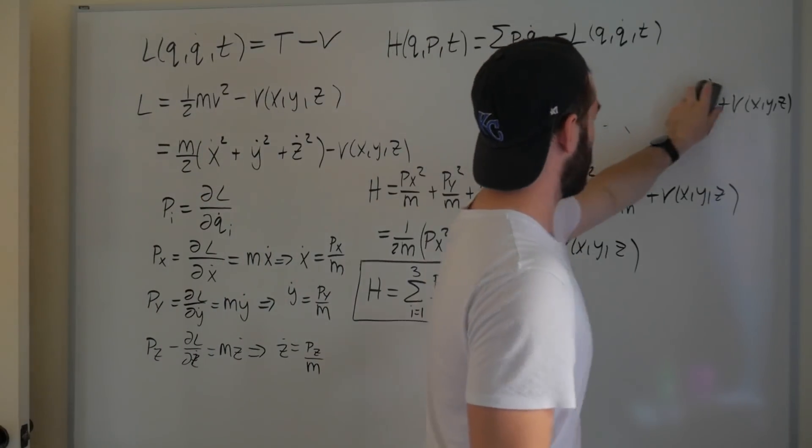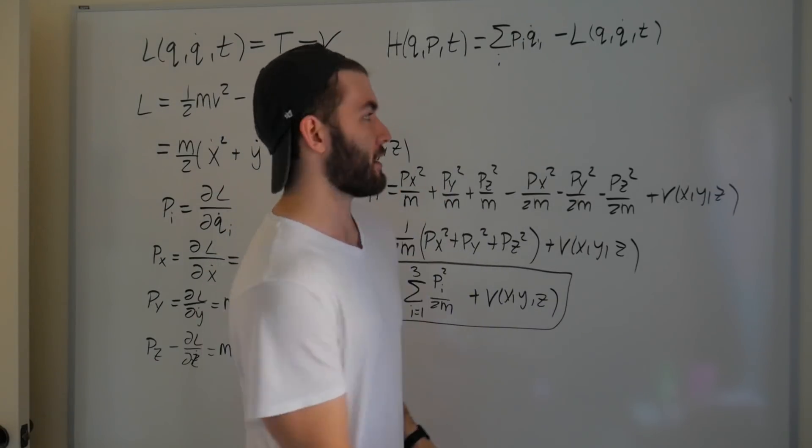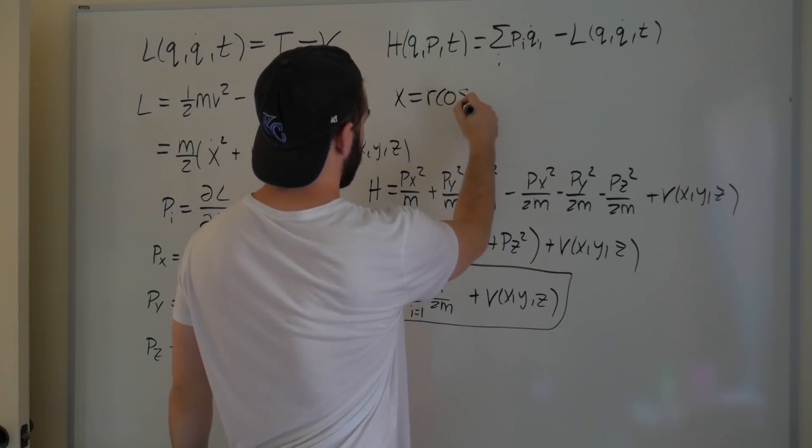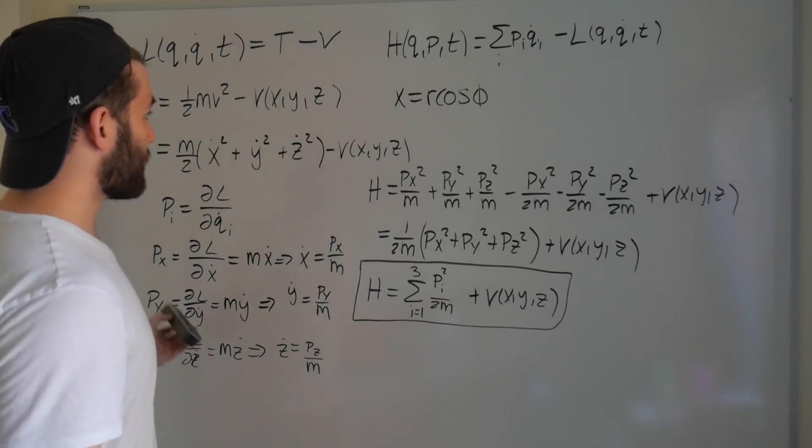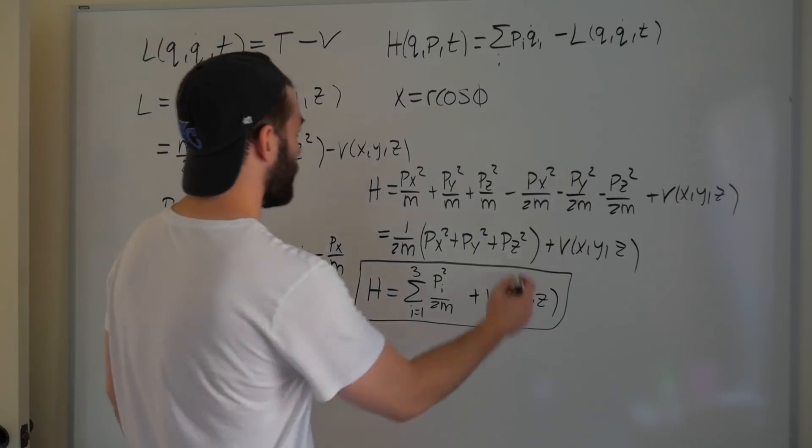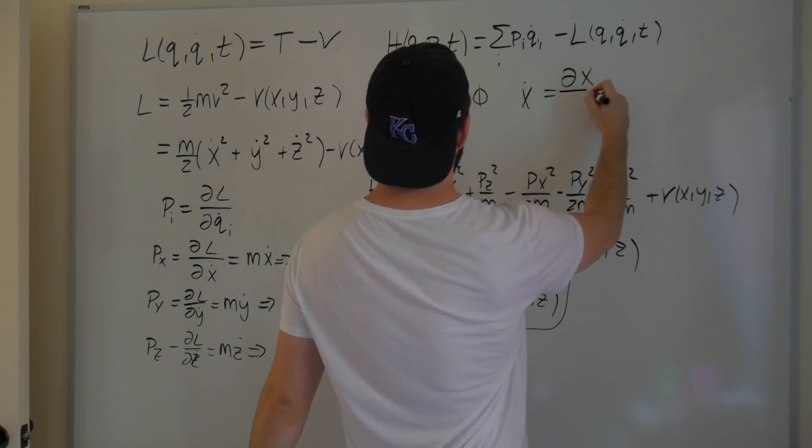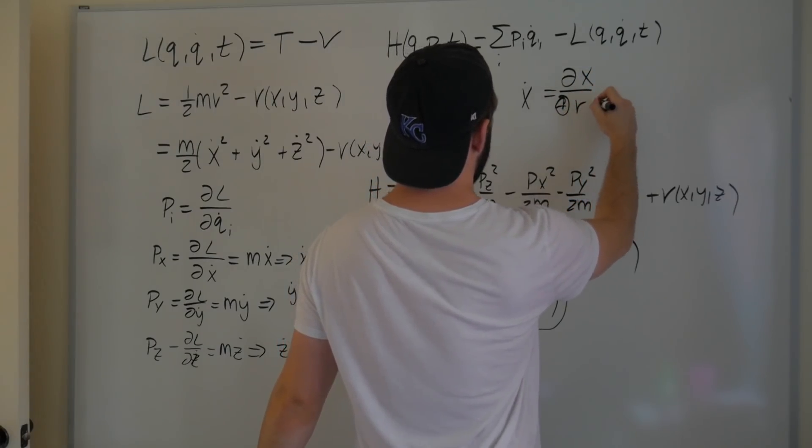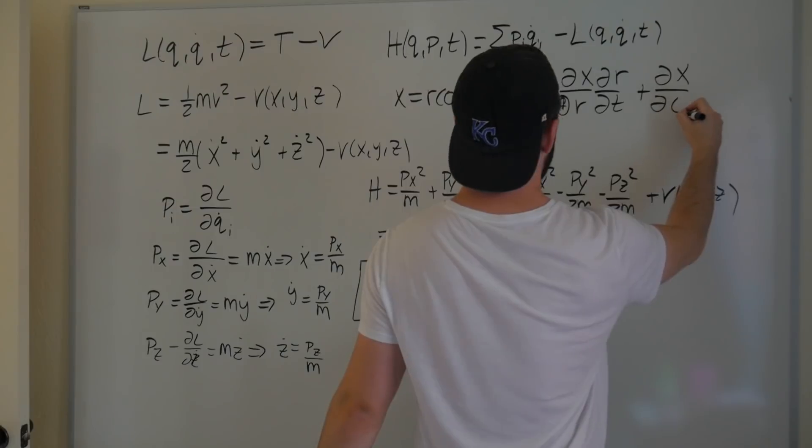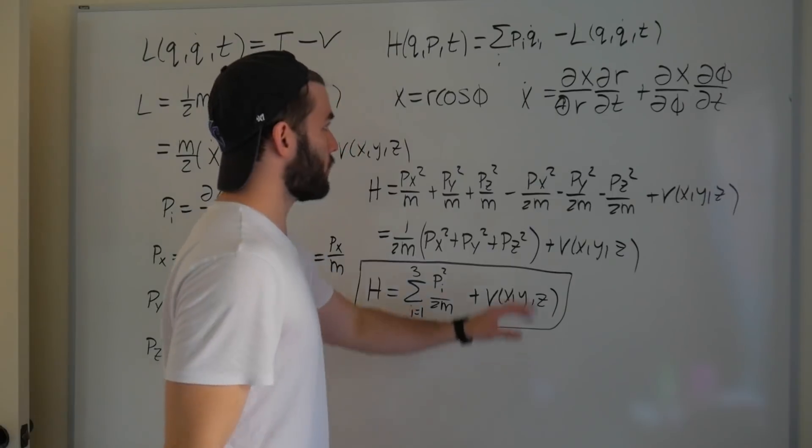Something that would have been a bit more complicated, I'm going to erase this one for just some room, is if we were working in a different coordinate system, like if we were to have cylindrical coordinates, where x is equal to r cosine phi, or something like that. The thing that would make this a little bit more involved is when it comes to calculating these time derivatives, because x dot would equal dx/dr times dr/dt plus dx/d phi times d phi/dt.